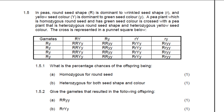Remember when we talk about dihybrid crosses, we are looking at two characteristics or two traits at the same time. Now what we have here is a seed shape gene or trait and also a seed color. So those are the two traits that we're looking at.